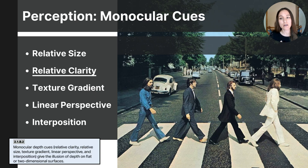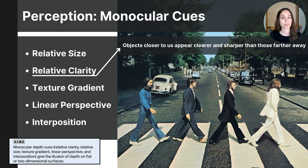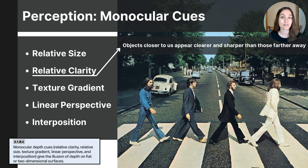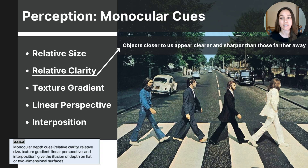Relative clarity is a cue that relies on the difference in sharpness between objects at varying distances. Closer objects appear sharper and more detailed, while those farther away look hazier and more blurry. In the photograph, you can clearly see Paul McCartney walking barefoot — you can even see the wrinkles in his suit. However, as you look farther back, things become less detailed. Notice the white Volkswagen: you can see it has a license plate, but you may not make out the number. Cars farther in the distance become less and less clear. This decrease in clarity indicates distance and is called relative clarity.